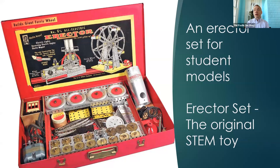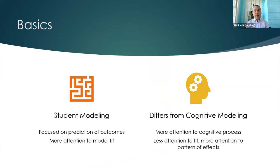Student modeling differs from cognitive modeling. A student modeling approach is focused on the prediction of outcomes — we're more interested in model fit and how well we can do the prediction and whether that prediction generalizes than we are in any theory of learning necessarily. With cognitive modeling, you have more attention to the actual cognitive processes, like how many milliseconds encoding takes, and less attention to fit, more to the pattern of effects and mechanism of explanation.